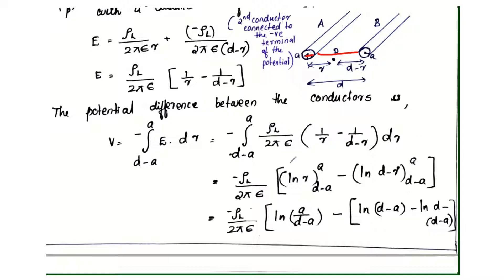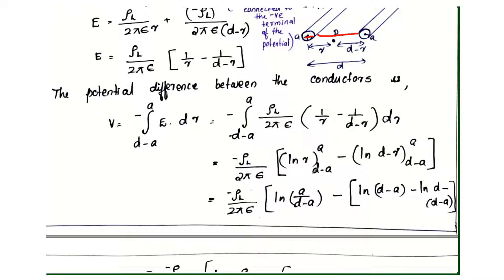So this is rho_l divided by 2 pi epsilon. The integral of 1 by r dr gives ln r, evaluated at the limits. And the limit for the second term gives minus ln(d minus r). So we get ln(a divided by d minus a), which equals ln(a by b).